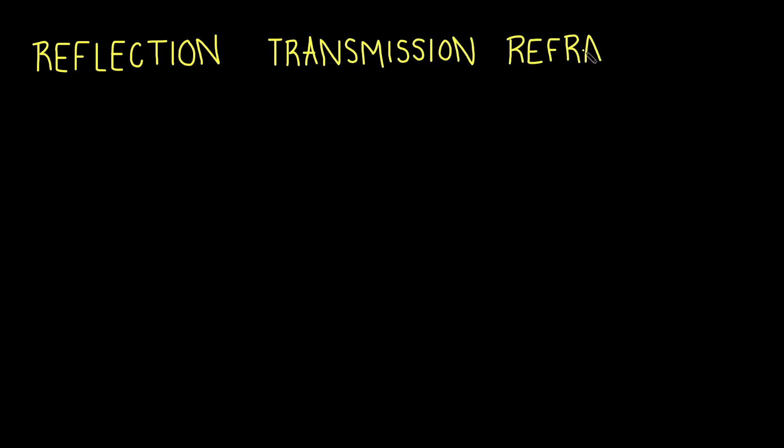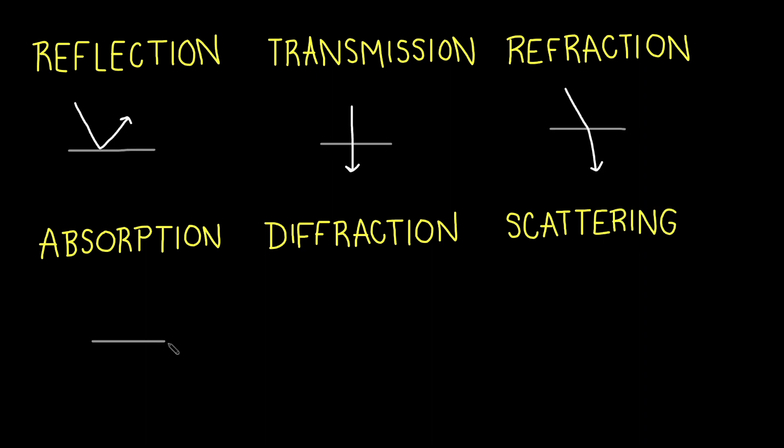First off, what is optics? Optics is the study of light, and usually when we're talking about optics we're talking about visible light and the way it interacts with matter. When a light wave encounters a surface, there are a few different ways it might behave: reflection, transmission, refraction, absorption, diffraction, and scattering. All of these terms are just ways of saying that light interacts with the surface in a specific way depending on what material it encounters. So first up, reflection.